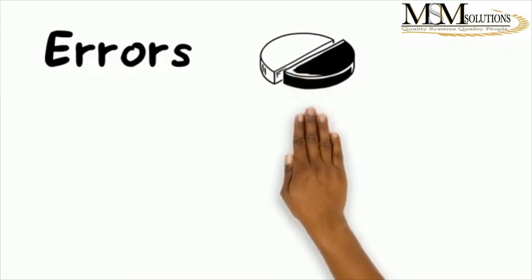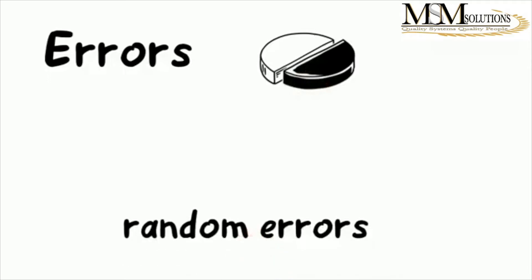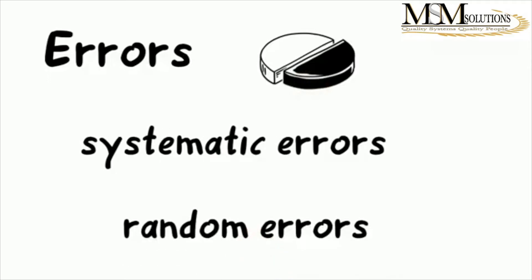Errors are part of a scientific measurement. They are things that we cannot run away from. There are two different types of errors, known as random errors and systematic errors.